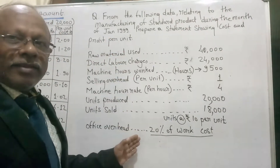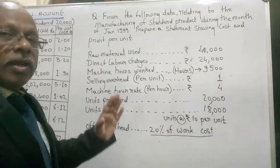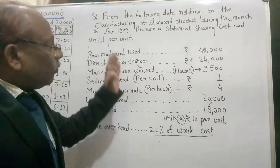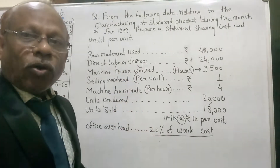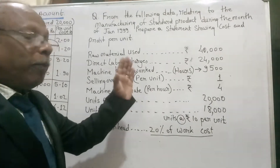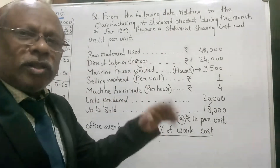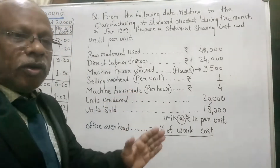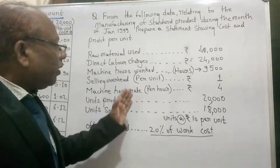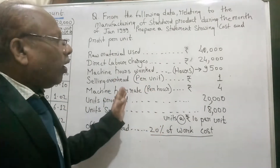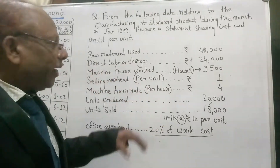Let's understand the details given here. We need to calculate the closing stock and the cost per unit of production, along with other things such as work-on-cost. One rupee of office-on-cost is 1 rupee over work-on-cost. We will see how to write the solution.